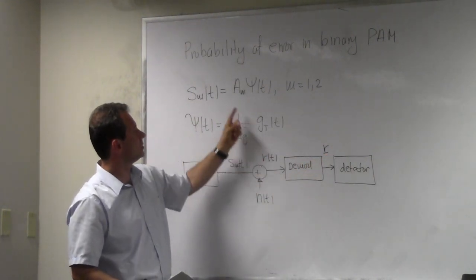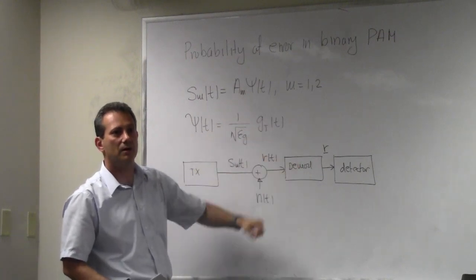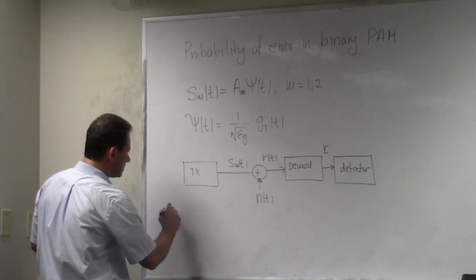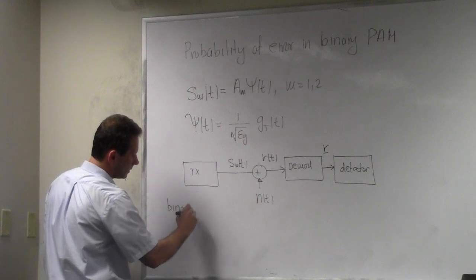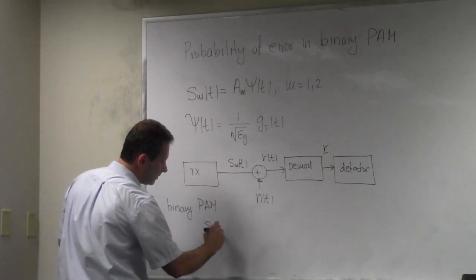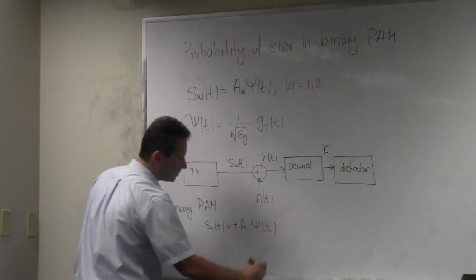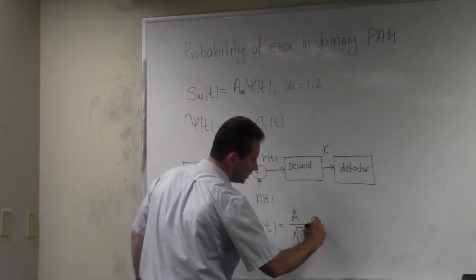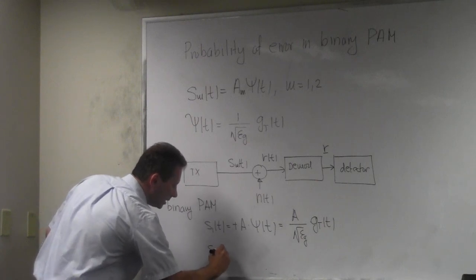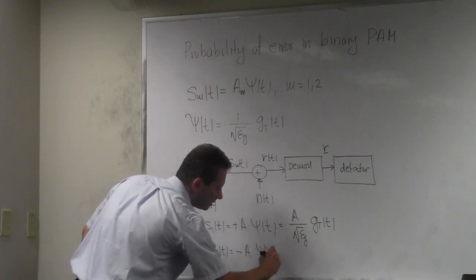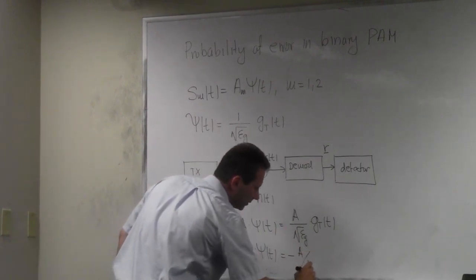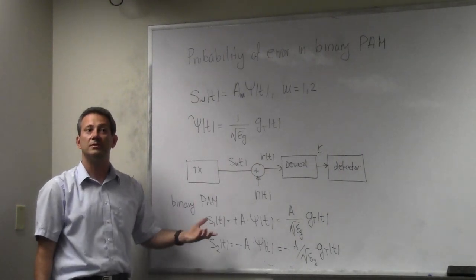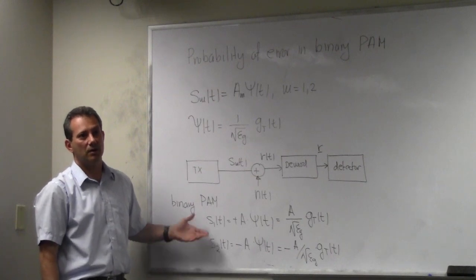In this case it's going to be trivial because we have only one basis vector, so this is just going to be one matched filter or correlator. In binary pulse amplitude modulation, we have S₁(t) = +A × ψ(t), that's our first symbol, and S₂(t) = −A × ψ(t). Since we have only two symbols — two bits, zero and one — we have one bit per symbol. If zero comes, I send minus A; if one comes, I send plus A times ψ(t).